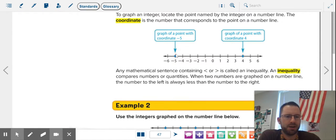You can compare integers with inequalities. So here, four is greater than, that's the greater than symbol, negative five. Or you could say negative five is less than four. So we can compare integers in a couple different ways.